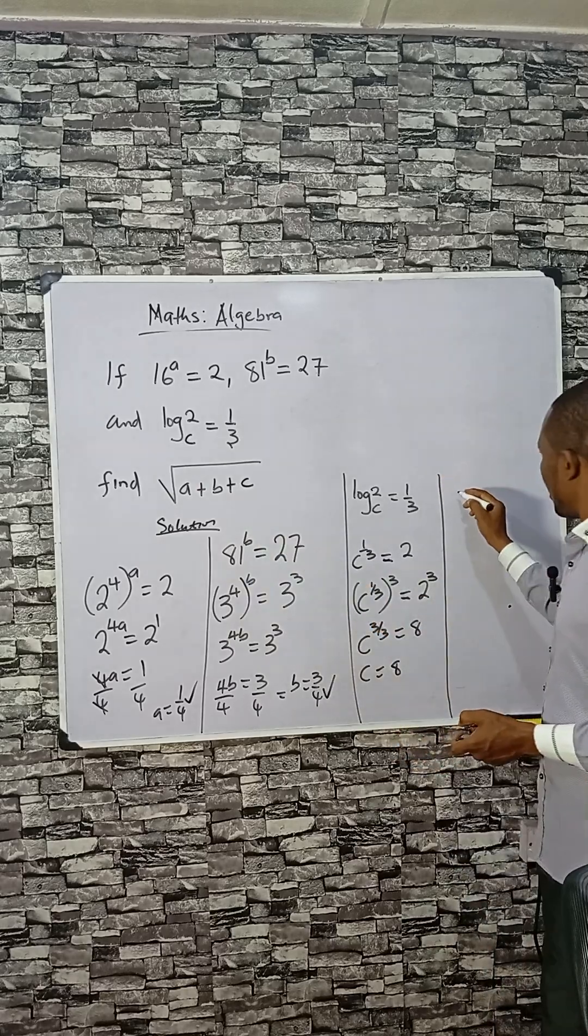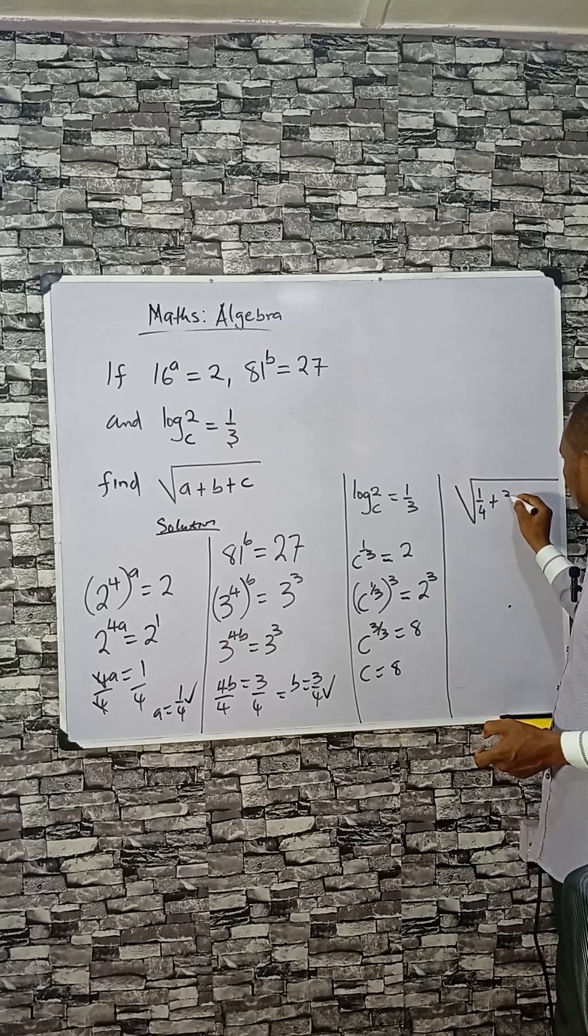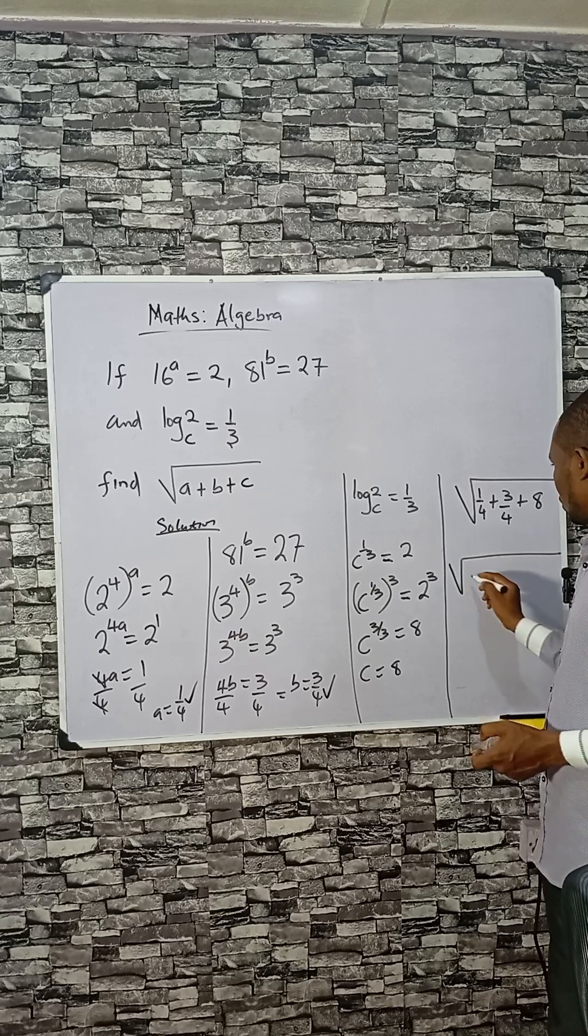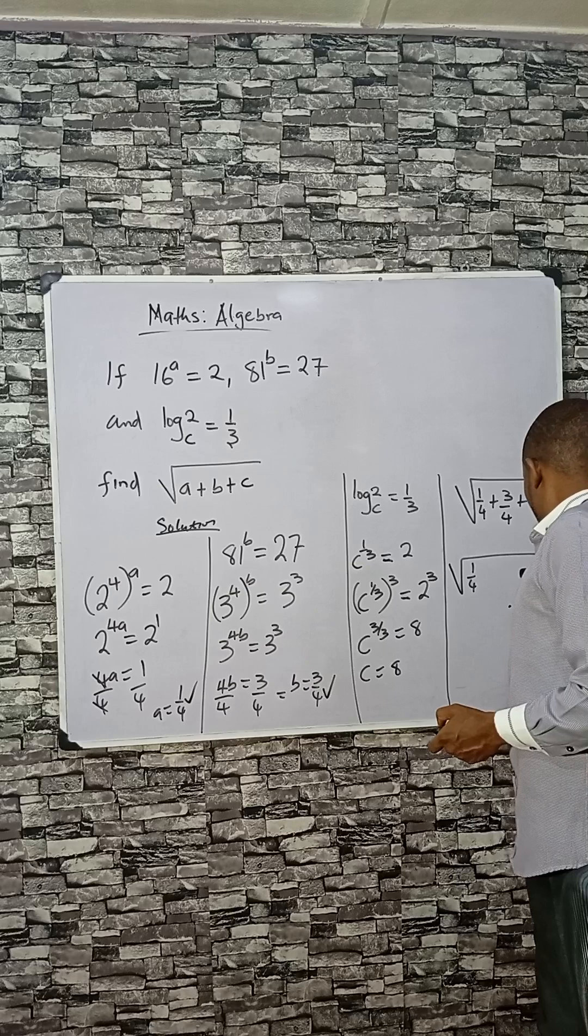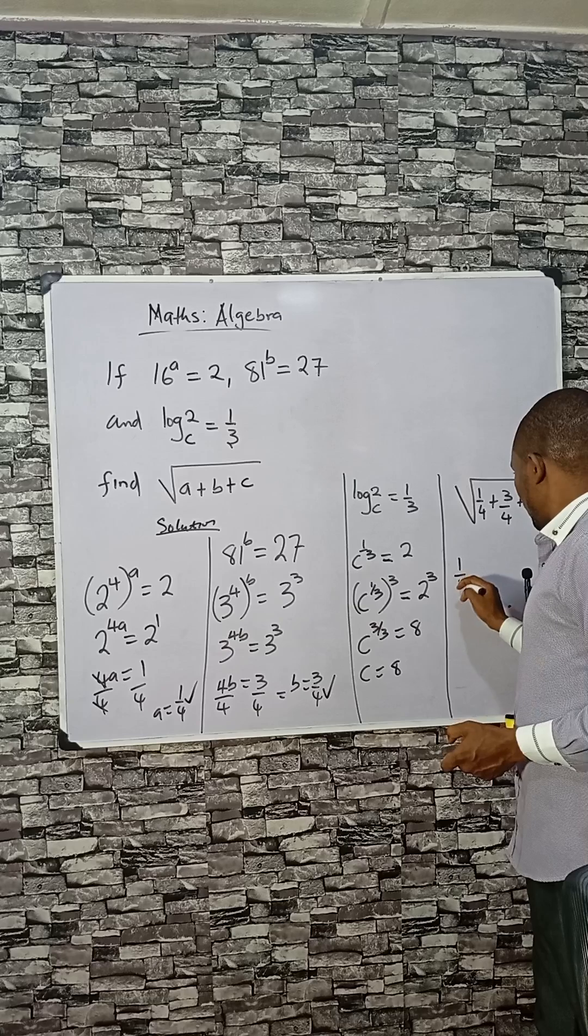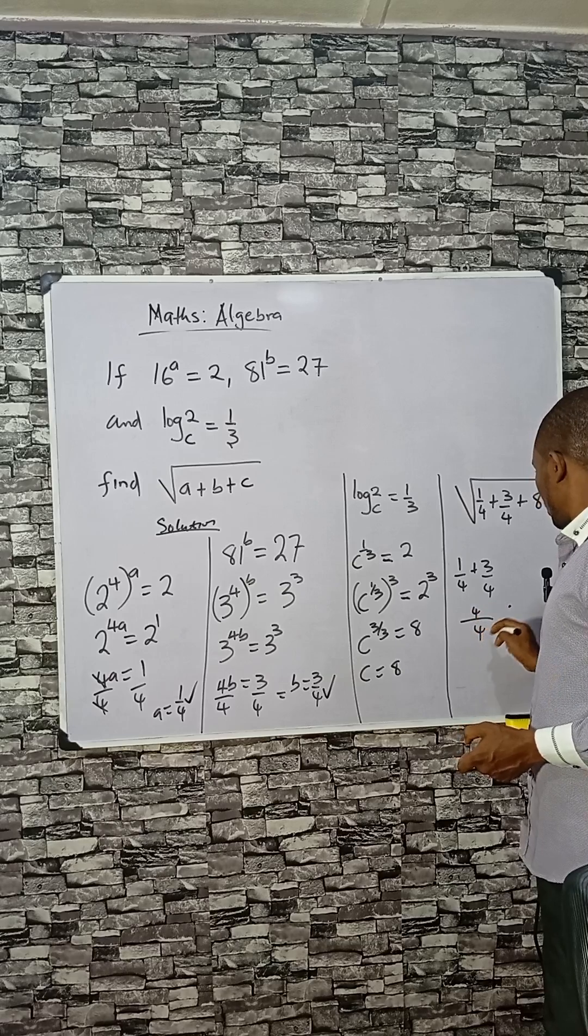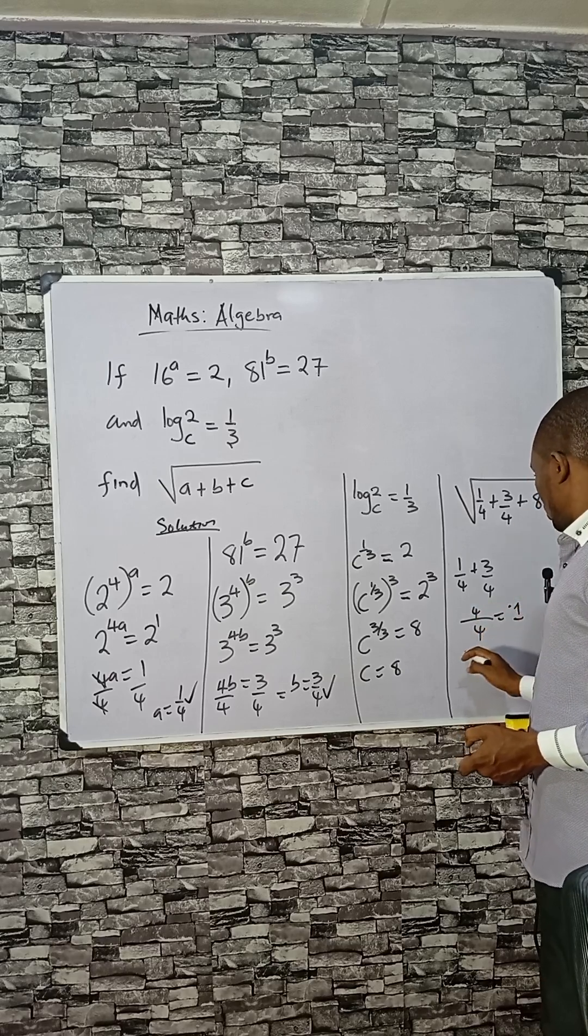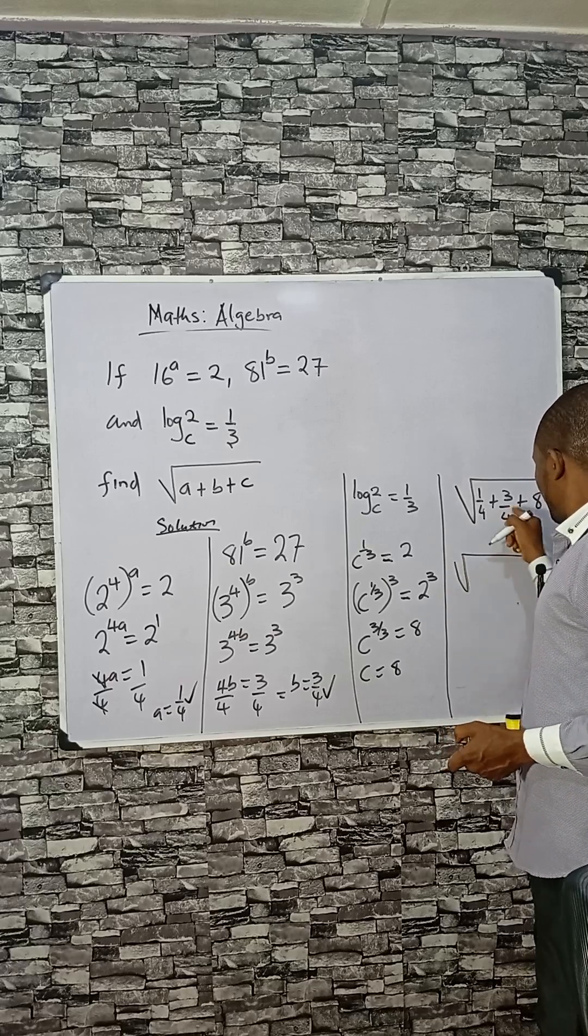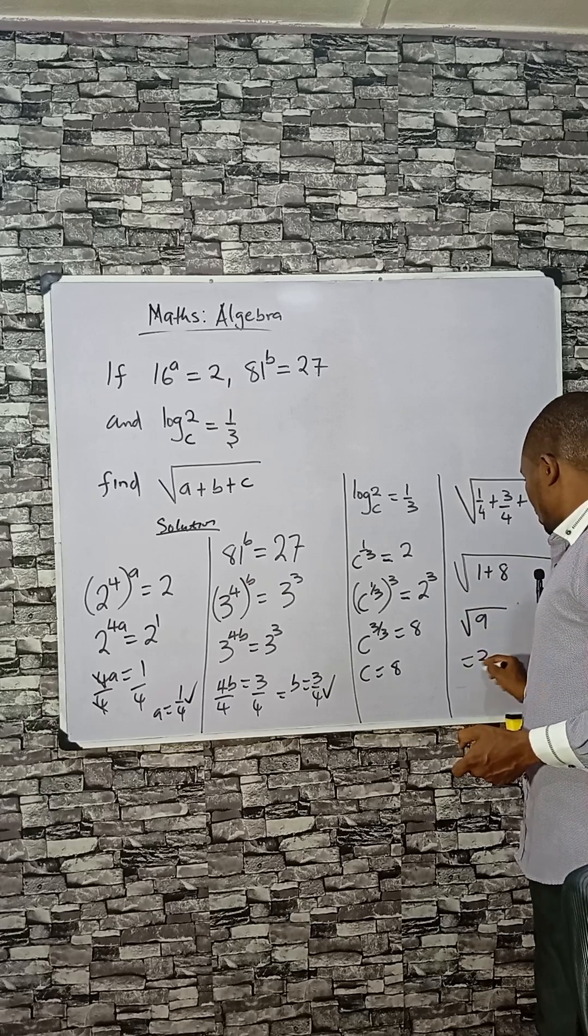Now we are told to find the square root of a plus b plus c. a is 1 over 4, b is 3 over 4, c is 8. Now 1 over 4 plus 3 over 4: 1 plus 3 is 4, 4 divided by 4 is 1. And if we add this, we have 1 from there. This plus gives you 1 plus 8, that is 9. So the square root of 9 is 3. So the expression here is 3.